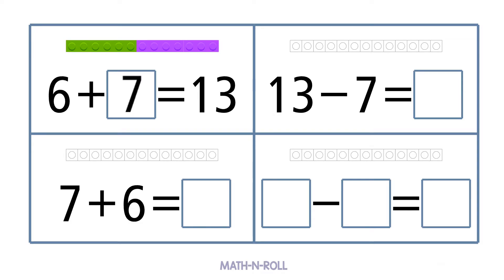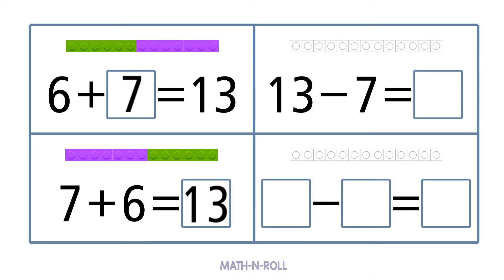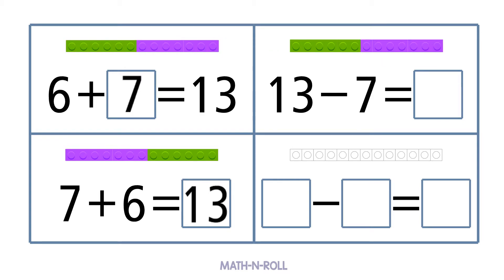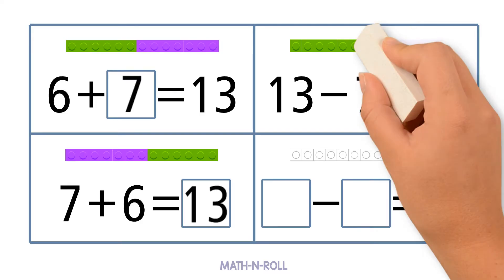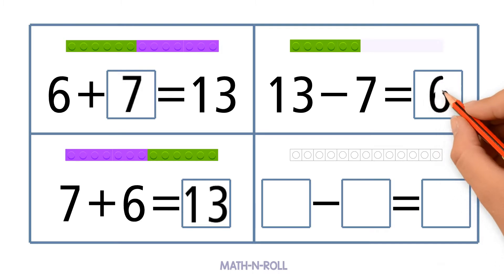Let's take a look at the next addition fact. This is a related fact because we changed the order of the add-ins. So 7 plus 6 equals 13. Let's look at the next related fact. This is a subtraction fact. We start with our largest number, 13, and we subtract one of the smaller numbers, 7. 13 minus 7 equals 6.